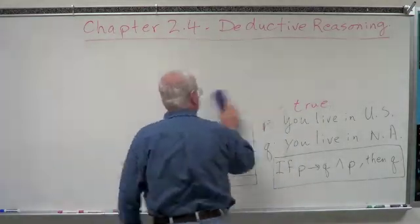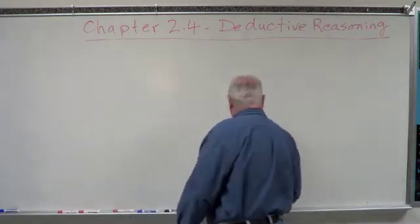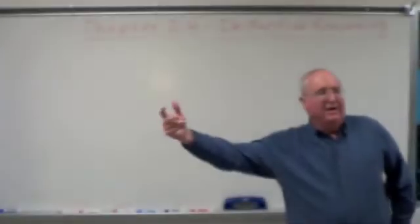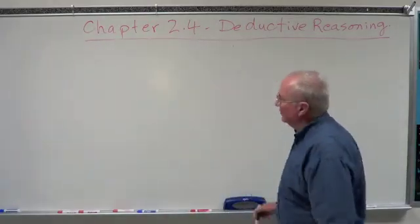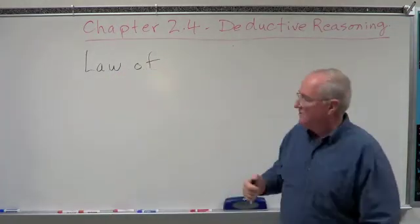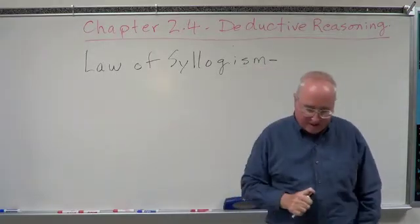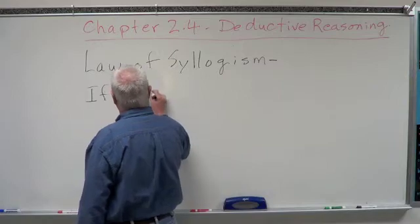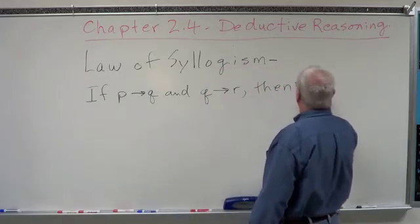Now the law of syllogism is what I call the transitive law of conditional statements. It basically ties a bunch of conditional statements together. If conditional statement A is true, and B is true, and C is true, and D is true, and on and on, then you can say: if A, then Z. The law of syllogism simply says: if P then Q, and if Q then R, therefore P then R.